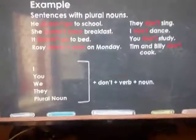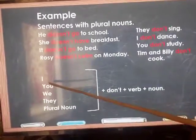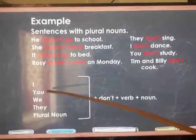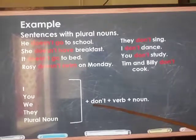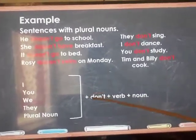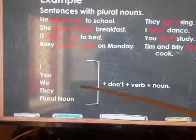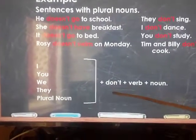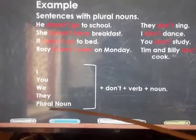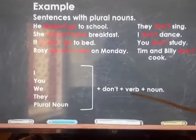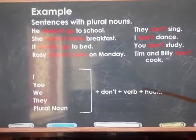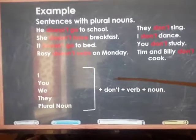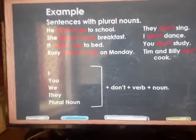The rule for plural nouns: I, you, we, they, and plural nouns use 'don't' plus the verb. A plural noun means more than one. For example: 'I don't walk. I don't drink.' You just add the verb after 'don't.'